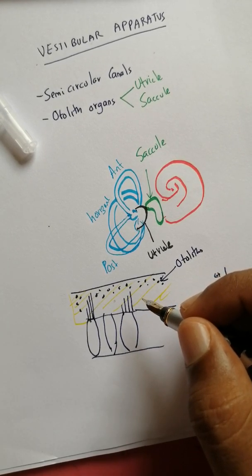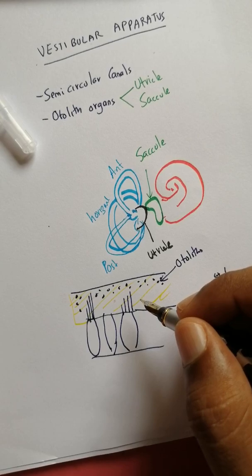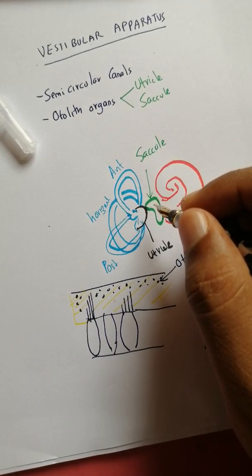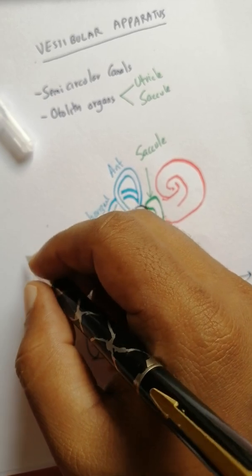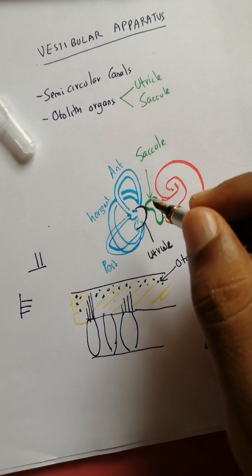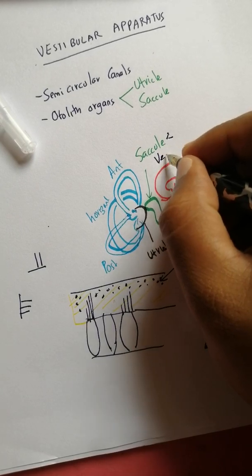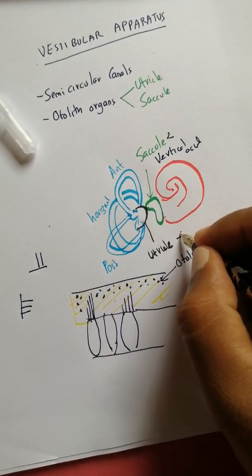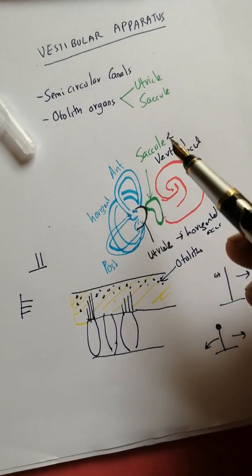In the saccule, the macula is oriented vertically, and in the case of the utricle, it is oriented horizontally. So we can have vertical and horizontal detection. Hence, the saccule detects vertical acceleration, while the utricle detects horizontal acceleration because of the alignment of the hair cells.